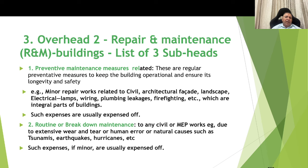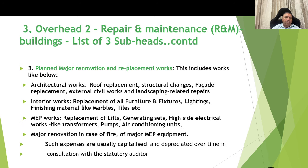Overhead number 2: repair and maintenance for buildings — list of three subheads. Subhead 1 is preventive maintenance related expenses, such as minor repairs to civil or MEP works. Subhead 2 covers expenses due to excessive wear and tear, human errors, or natural causes such as tsunamis, earthquakes, or hurricanes; if minor, these are usually expensed off. Subhead 3 is planned major renovation and replacement works, including replacement of the roof, entire roof structure changes, facade replacement, external civil works, landscaping, interior works, MEP works like replacement of lifts, generating sets, high-side electrical works like transformers, and major renovation in case of fire. Such major expenses are usually capitalized and depreciated over time.